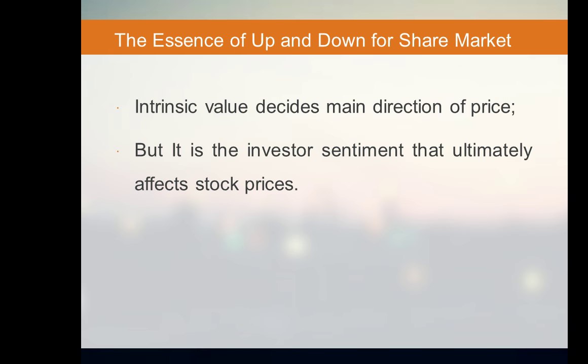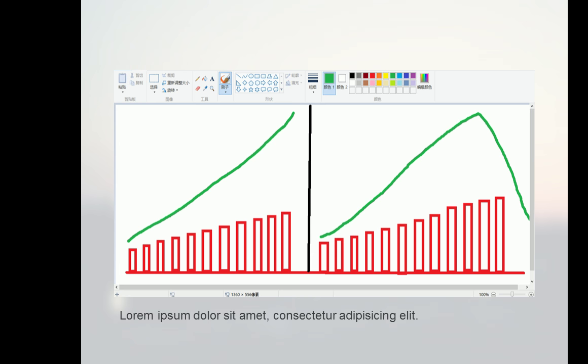The essence of ups and downs in the share market: intrinsic value decides the main direction of price, but it is investor sentiment that ultimately affects stock prices. From the chart, if the performance is good, the volume increases and the price goes up. Then the price starts to go down and volume decreases — the company fundamentals may no longer be good. You should pay attention to these signals.